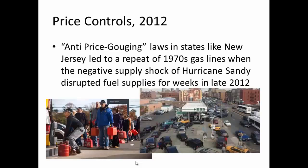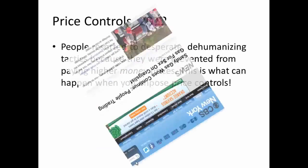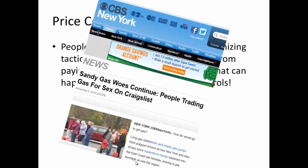An example of the detrimental effect of price gouging laws occurred when Hurricane Sandy hit the U.S. East Coast in November of last year. Price gouging laws prevented the price from rising in the face of an adverse supply shock, and we saw a repetition of the 1970s oil crisis effects — people waiting in long gas lines on the East Coast. Sadly, people sometimes resorted to desperate and dehumanizing tactics to purchase gasoline because they were prevented from paying higher money prices. This is what can happen when you implement price controls.